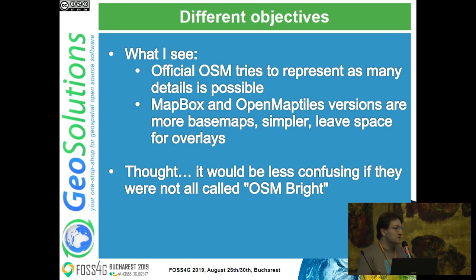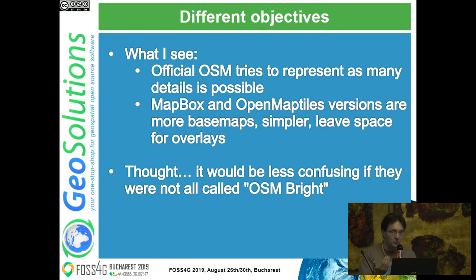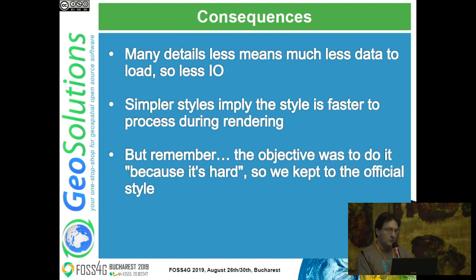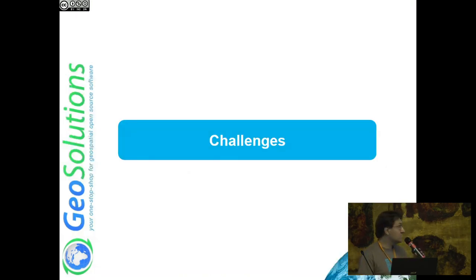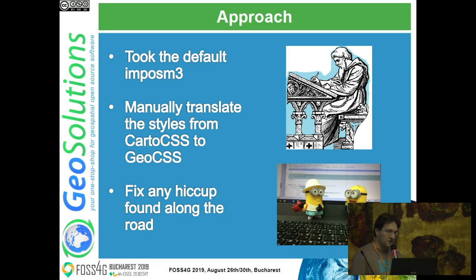What I see personally is different objectives. OpenStreetMap.org tries to represent as many details as possible - it tries to make an kind of atlas. Mapbox and OpenMapTiles are trying to go towards a base map instead, on which you can add overlays, and of course they cannot clutter them with all possible information because you have to add your own on top. The only note I have is it would be less confusing if they were not all called OSM Bright. The consequence of a simpler map is that you have to load much less data and have simpler styles that render much faster - I could have gone that way, but the objective was to do it because it's hard, so I kept the official style.